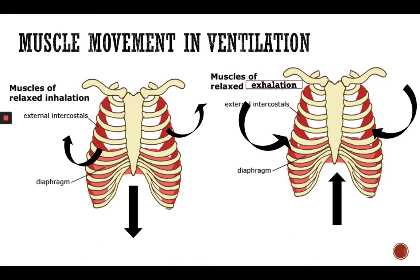Muscle movement and ventilation — while we are breathing in and breathing out, we use our muscles. When we are breathing, there are two bands of muscles that cover our ribs: the external intercostal and internal intercostal muscles, and the diaphragm also takes action. During relaxed inhalation, the external intercostal muscles contract and expand, giving the lungs more room, while the diaphragm moves down and creates a cavity for the lungs to expand. During exhalation, the internal intercostal muscles contract and shrink, the diaphragm goes up, removing the cavity for the lungs and letting the lungs return to their resting state.